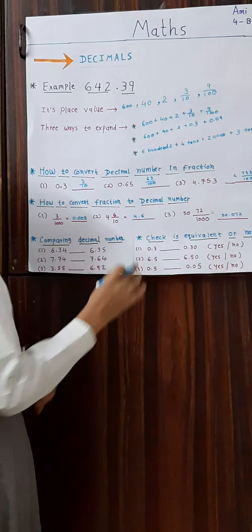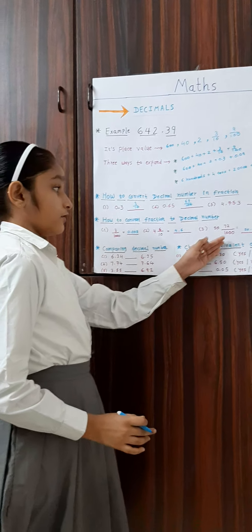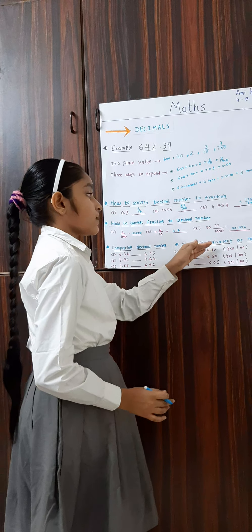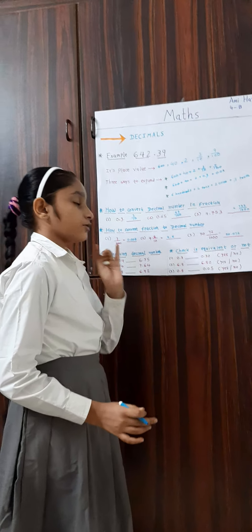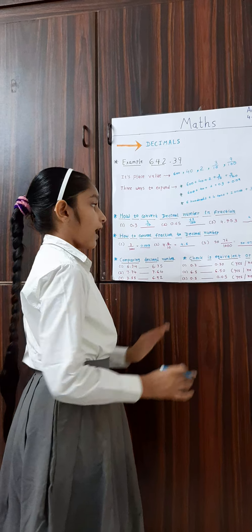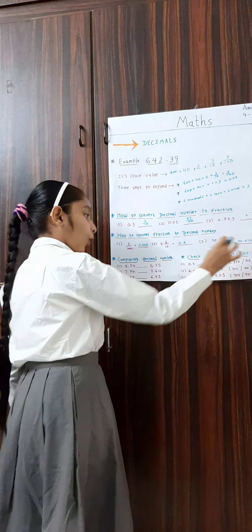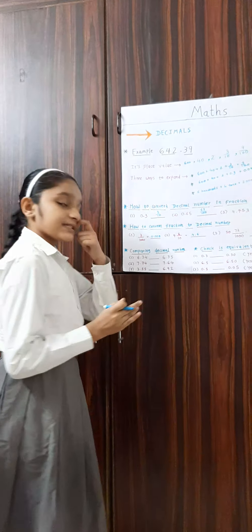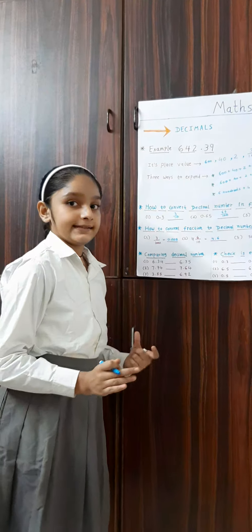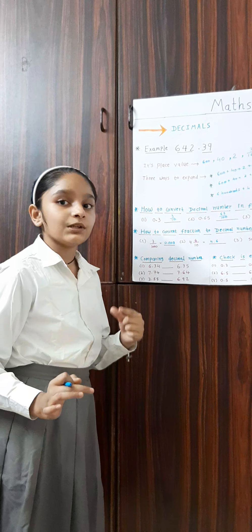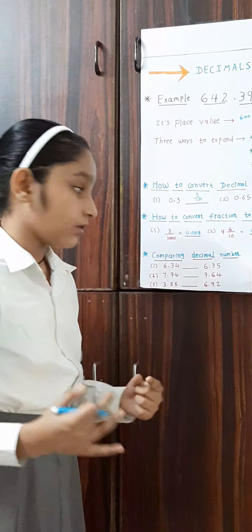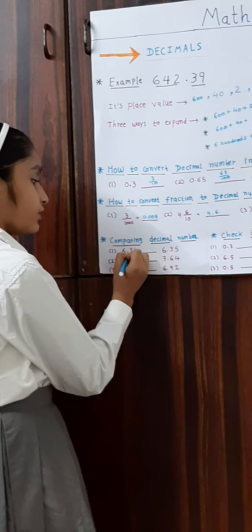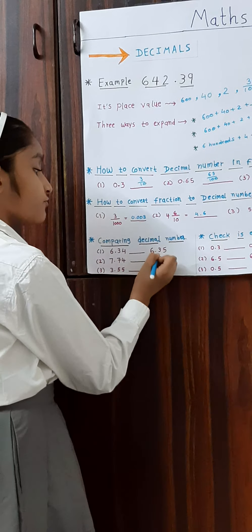We have to make three digits after the decimal point. Now, comparing decimal numbers means putting signs — equal to, less than, and so on. For example, 6.34 and 6.35.